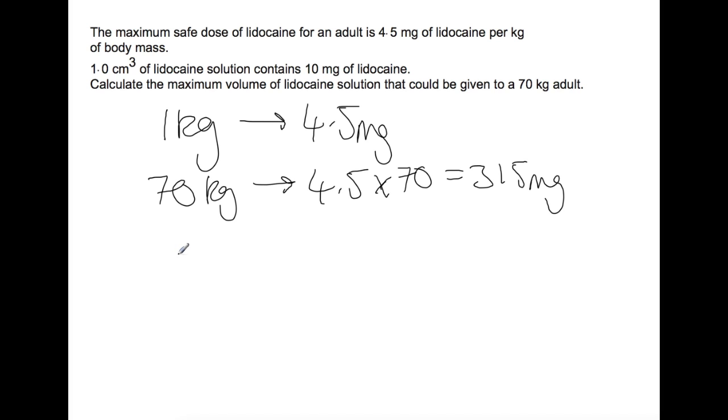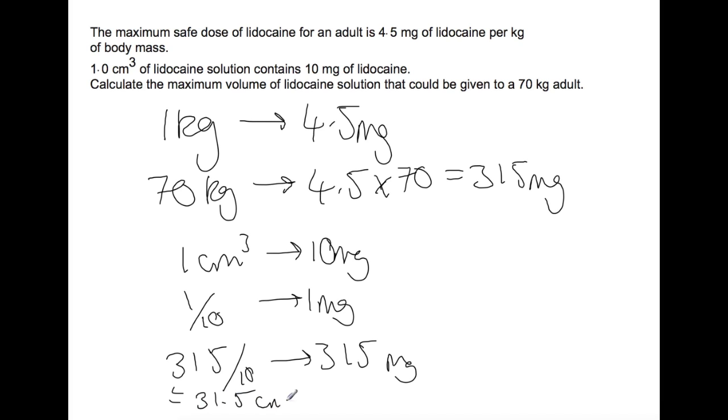We then have to look at how much volume we could give them. So we know that one centimeter cubed gives you 10 milligrams, so one divided by 10 would give you one milligram. And then if we multiply up by the amount of milligrams that we know the person can have, which is 315, if you calculate that value you would be able to give them 31.5 centimeters cubed of the solution.